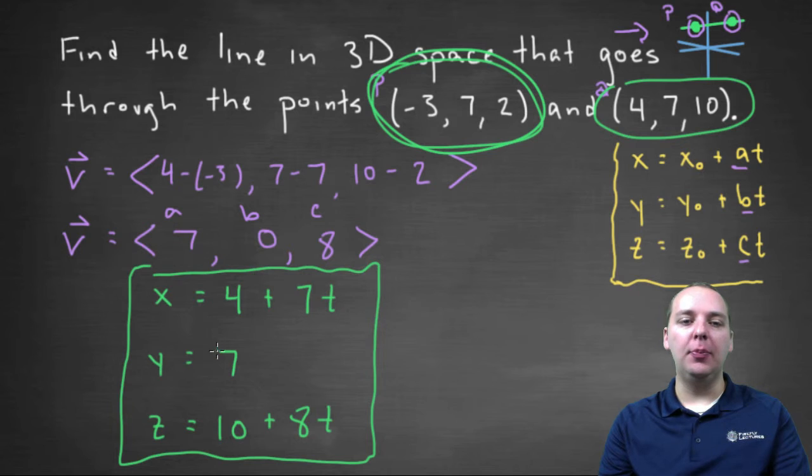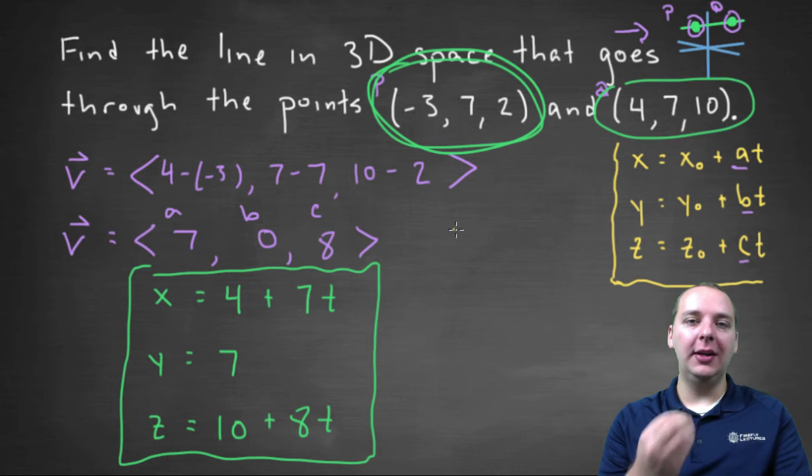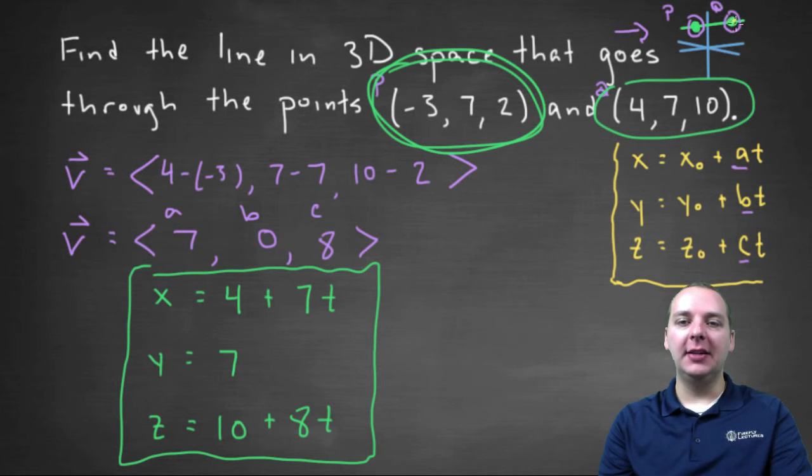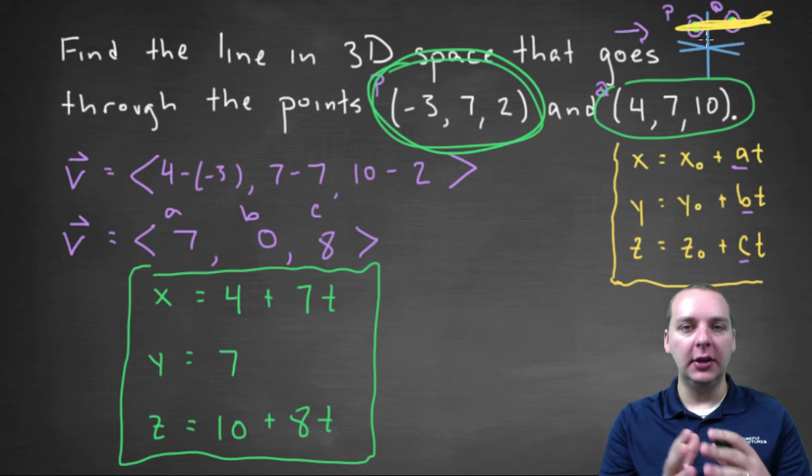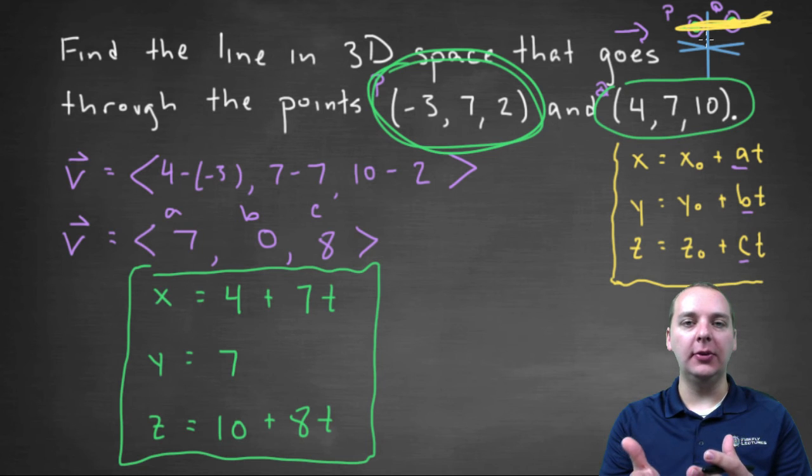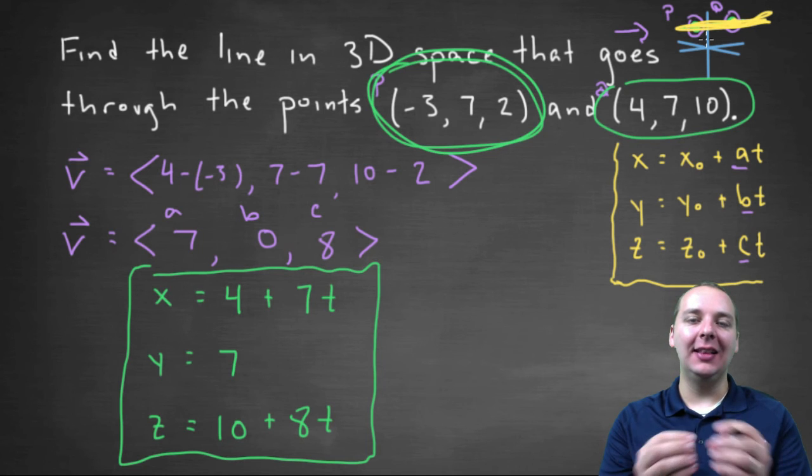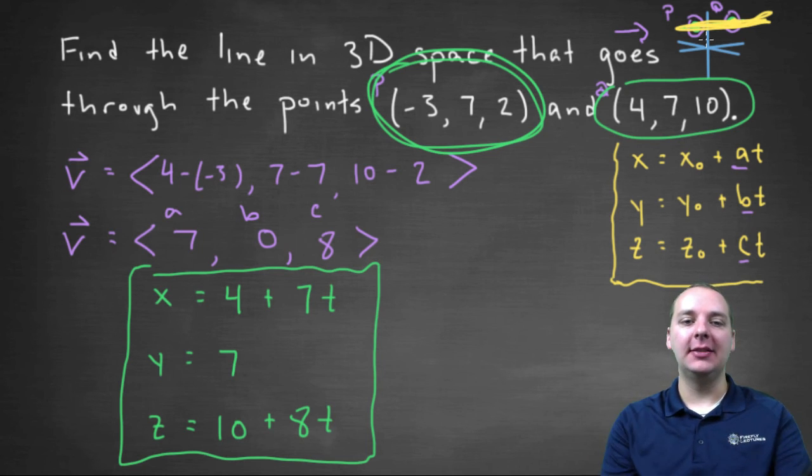Not really. The parametric equations would look a little different, but it would sketch out the same line. Here's the only difference. Your starting point at T equals zero, instead of starting it at Q and sketching out the whole line, it would simply start at P and sketch out the whole line as T varied. So you would be at different points at different T values, but at the end of the day, you would get the same line as an end result.